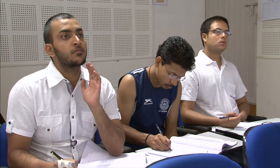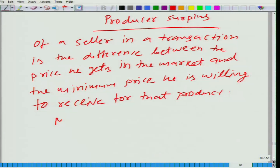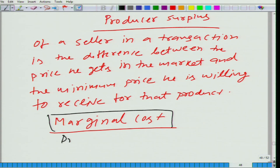Where do we get this minimum price? It is his marginal cost. A seller would not like to receive a price that is less than his marginal cost. And the price he receives in the market is the market price.